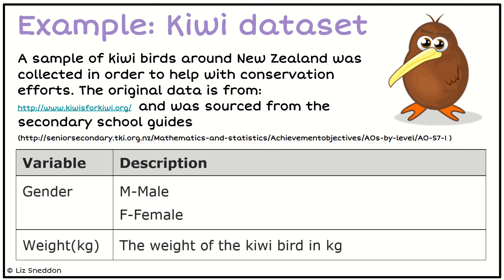Let's have a look at our kiwi dataset. This is some of the metadata about the kiwi dataset, and I'm focusing on two particular variables: the gender and the weight of the kiwi bird. We'll now go through each of the different sources of variation, identify and explain them, and talk about how we could manage them and what the effect might be.